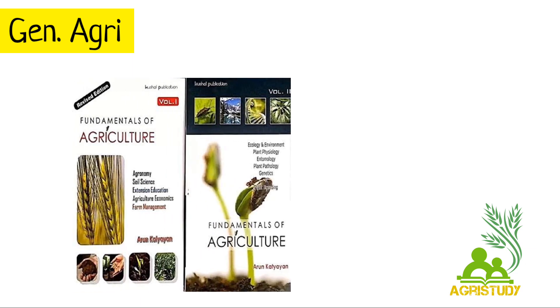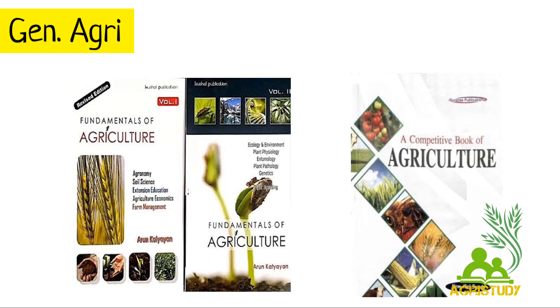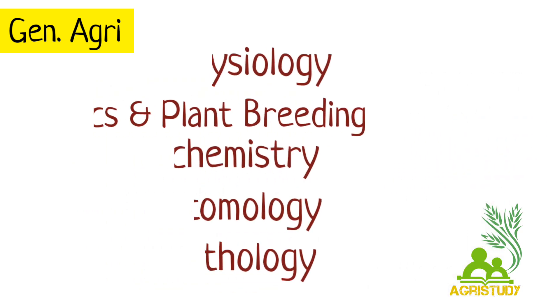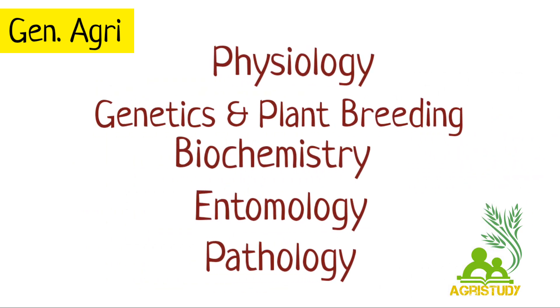For the General Agriculture portion, the three most important books are Fundamentals of Agriculture, both Volume 1 and Volume 2, written by Arun Katyan, and Competitive Book of Agriculture written by Nimra Sunda. You can also read other books, but give importance mainly to physiology, genetics and plant breeding, biochemistry, entomology, and pathology.